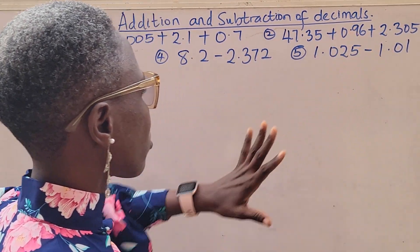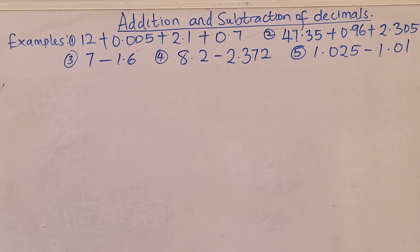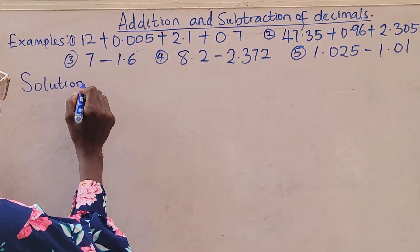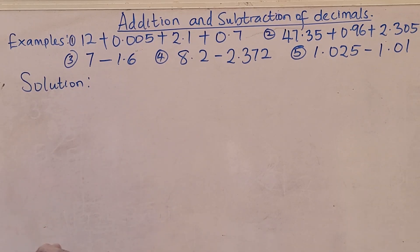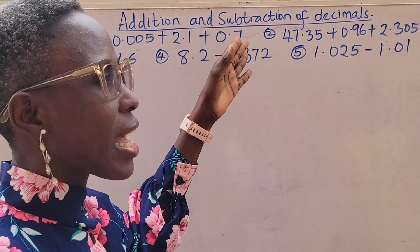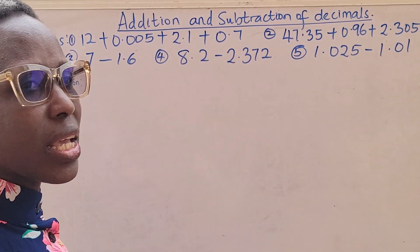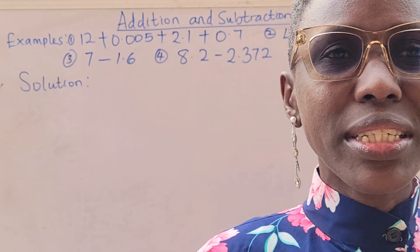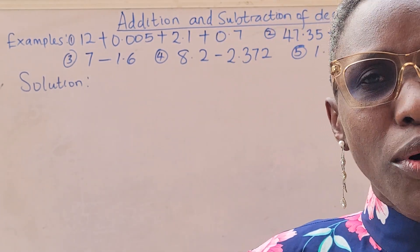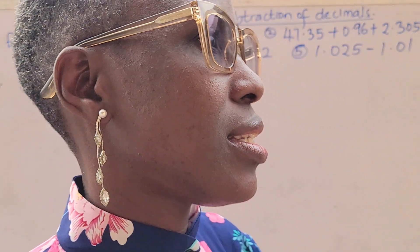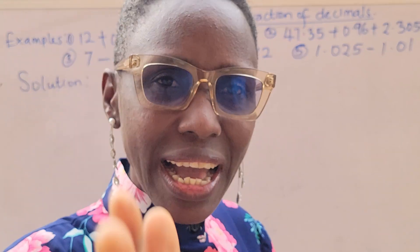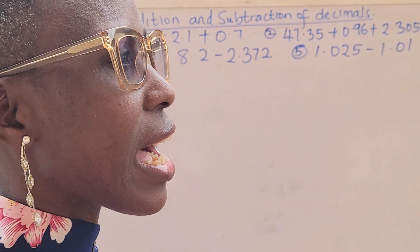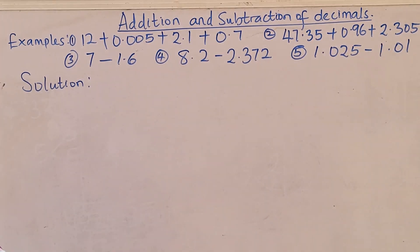You can see there are some examples already on the board that we'll be working with — some on addition and some on subtraction. Starting with addition: we are going to arrange our numbers in order. The most important thing is to ensure that the decimal points are aligned — they must be on the same line, no matter how you are arranging.